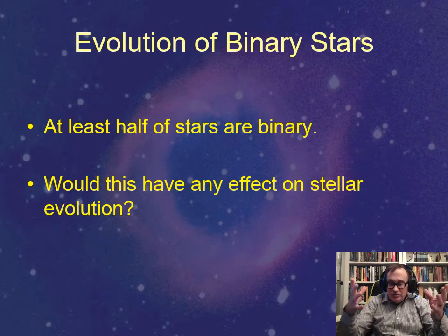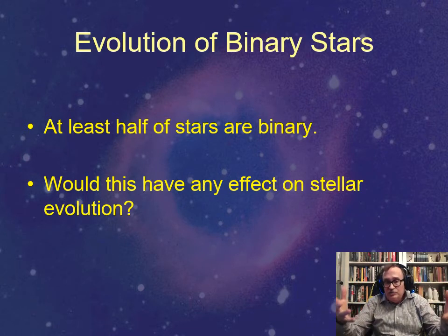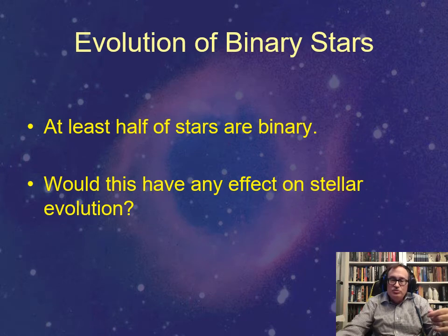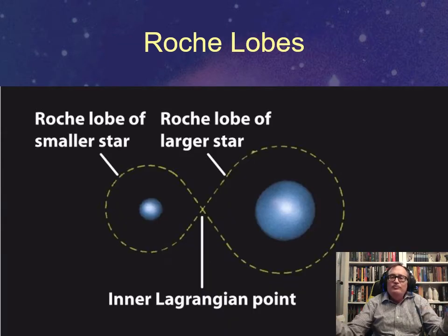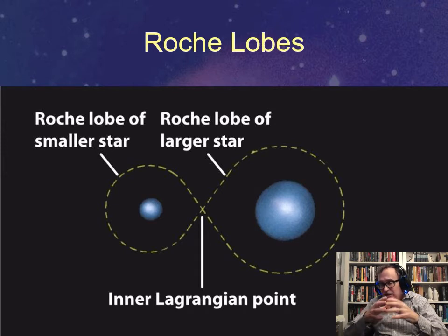So in that case when one expands, because remember the sun expands huge when it becomes a red giant, so that would matter. The key is what we call the Roche lobe, after Carl Roche who worked at the mathematics of this.